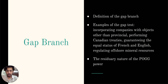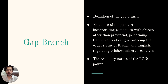Examples of the gap test include the power to incorporate companies with objects other than provincial, the power to perform Canadian treaties, the power to guarantee equal status of French and English in federal institutions and agencies, and the power to regulate offshore mineral resources.